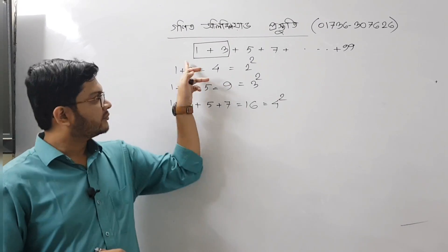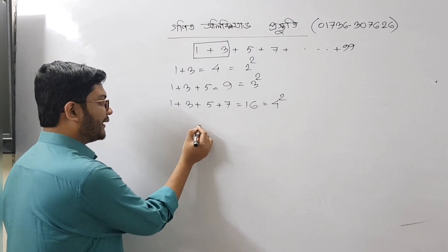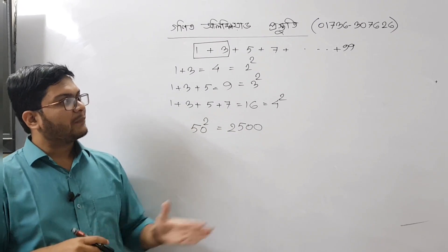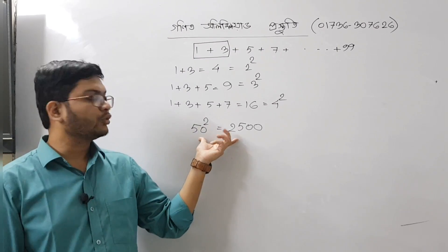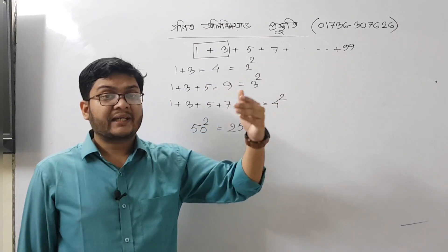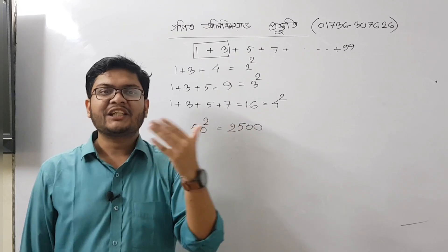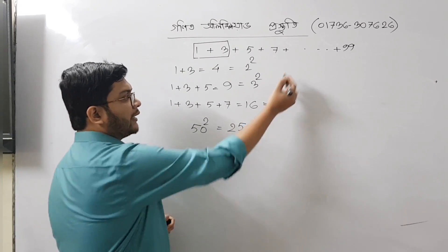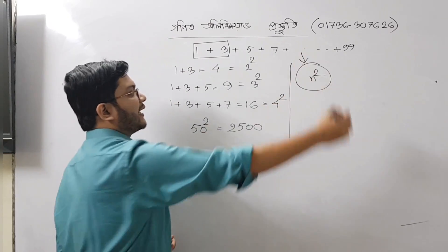Your idea is similar — 1 squared, 2 squared, 3 squared, 4 squared, 5 squared — so the answer is 50 squared, which is equal to 2500. This is equal to 50 squared. We are calculating the sum of the first n odd numbers, so the sum of the first n odd numbers is n squared.